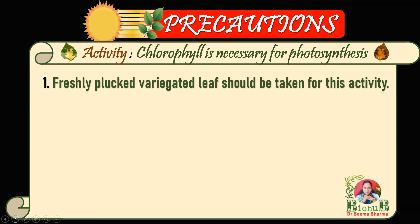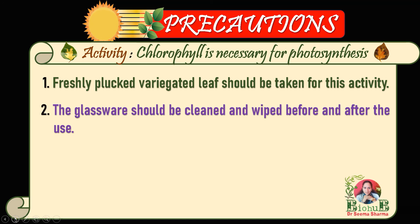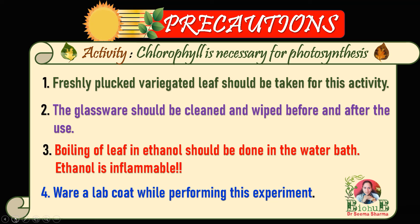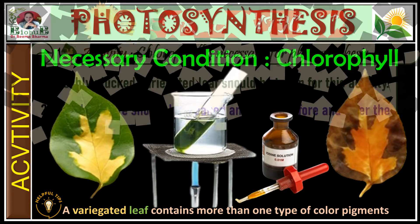Now the precautions: first, a freshly plucked variegated leaf should be taken. Second, glassware should be cleaned and wiped before and after use. Third, boiling of the leaf in ethanol should be done in a water bath, and very carefully, because ethanol is inflammable. Fourth, wear a lab coat while performing this experiment.